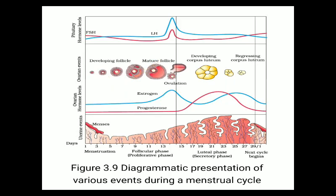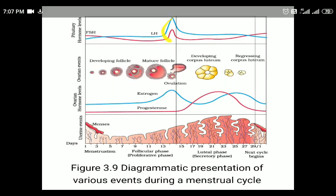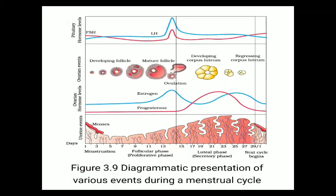Inside the ovary, the primary follicle transforms into secondary follicle, tertiary follicle, and finally the mature Graafian follicle. This Graafian follicle ruptures to release the female gamete by the process called ovulation. The Graafian follicle then transforms into a yellow mass of tissue known as corpus luteum. The pituitary gland releases FSH and LH, and in the ovulatory phase the level of LH gets increased - this is known as the LH surge.